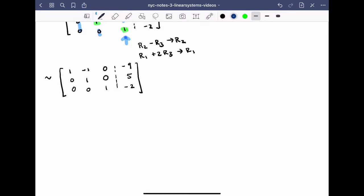We're almost in reduced row echelon form. We just have this final minus 1 to cancel. And to do that, we'll use the row operation row 1 plus row 2 becomes the new row 1. This gives me 1, 0, 0, minus 9 plus 5 is minus 4; 0, 1, 0, 5; and 0, 0, 1, minus 2.